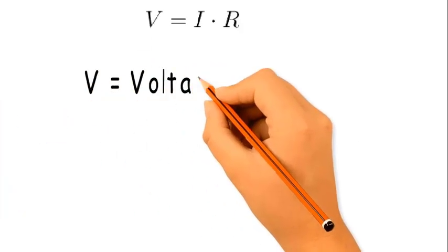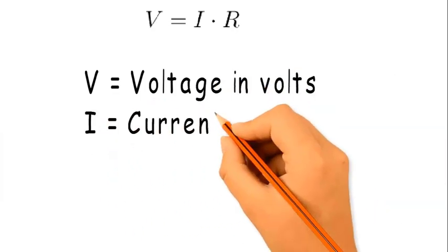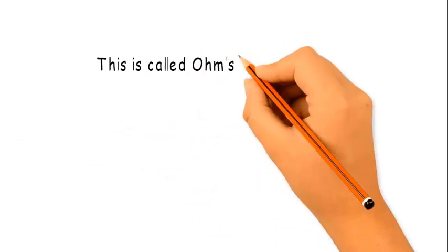V equals voltage in volts. I equals current in amps. R equals resistance in ohms. This is called Ohm's law.